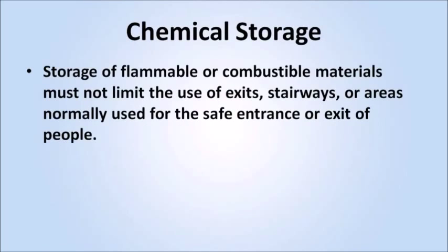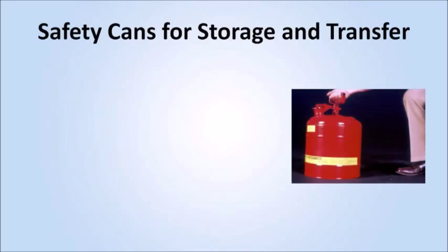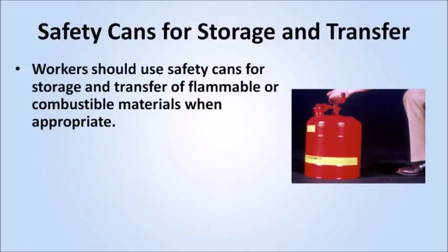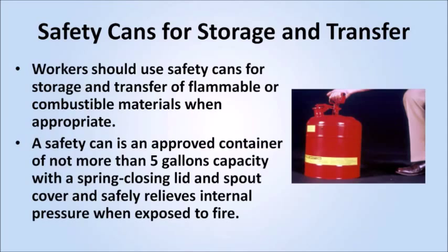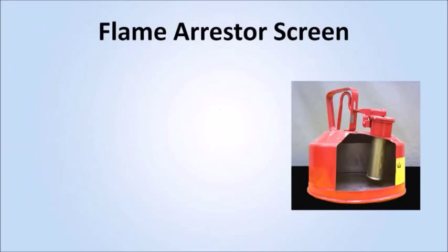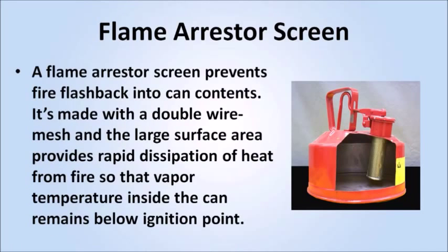Storage of flammable or combustible materials must not limit the use of exits, stairways, or areas normally used for the safe entrance or exit of people. Workers should use safety cans for storage and transfer of flammable or combustible materials when appropriate. A safety can is an approved container of not more than 5 gallons capacity with a spring closing lid and spout cover, and safely relieves internal pressure when exposed to fire. A flame arrestor screen prevents fire flashback into can contents. It's made with a double wire mesh, and the large surface area provides rapid dissipation of heat from fire, so that vapor temperature inside the can remains below ignition point.